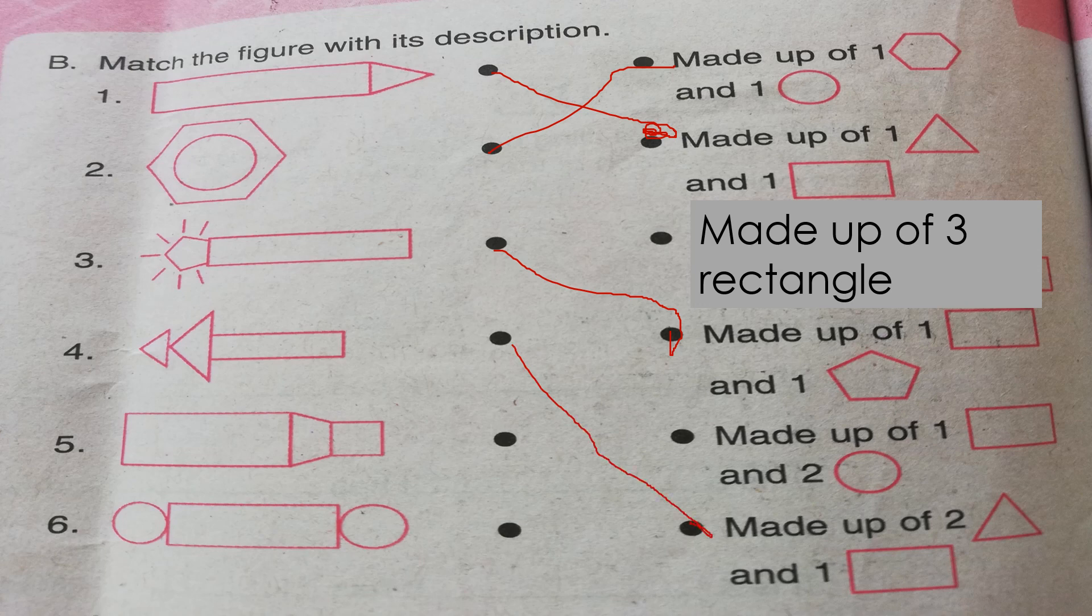How about figure number five? It is made up of three rectangles. One big rectangle and two small rectangles. So, that's three. Number six. It is made up of two circles and one rectangle. So, this is the answer.